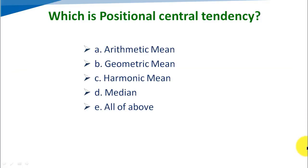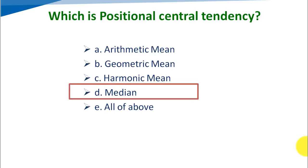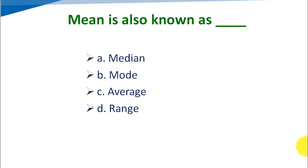First question: which is the positional measure of central tendency? Option A: arithmetic mean, Option B: geometric mean, Option C: harmonic mean, Option D: median, Option E: all of the above. The correct answer is D, median.